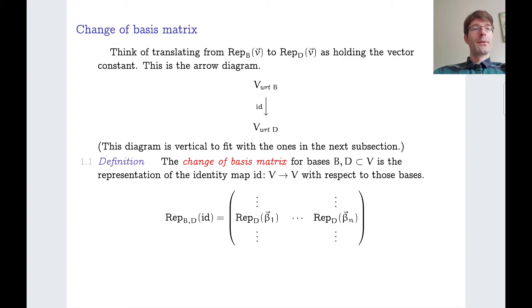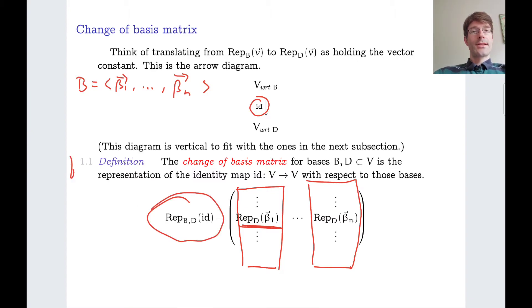Applying the previous program, we already know how to do this. So we take the basis vectors from B. They are beta 1 up to beta n. We put them through our map, which is now the identity map, and represent the result. So the beta i themselves with respect to the new basis D. And this gives us some vectors and we put these vectors as columns in our representation matrix. What is just defined in this definition is this term change of basis matrix. So we are now going to call the representation of the identity map with respect to the basis B and D. We are going to call this a change of basis matrix for basis B and D.